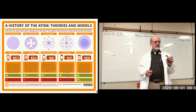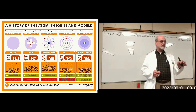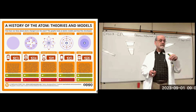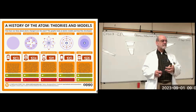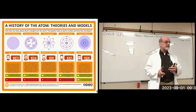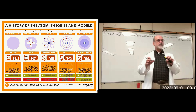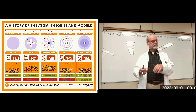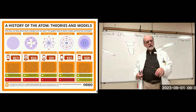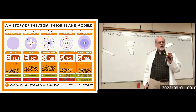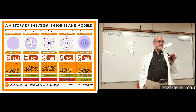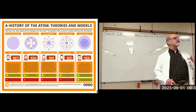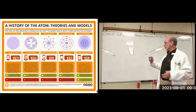It wasn't until John Dalton came along — he was an English scientist and the first experimentalist — that he backed up his pronouncements with experimentation. He proposed the atomic theory based upon an ancient Greek idea: the atom.